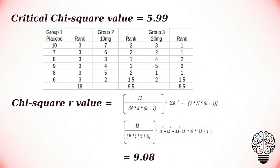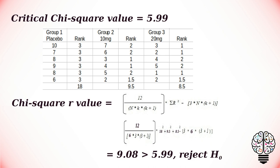So our chi-squared r value is greater than our critical value, so the null hypothesis is rejected and there is a statistically significant difference between the groups.